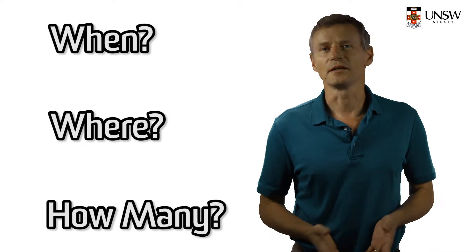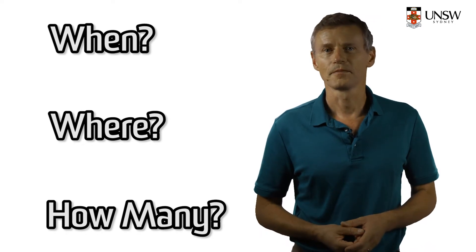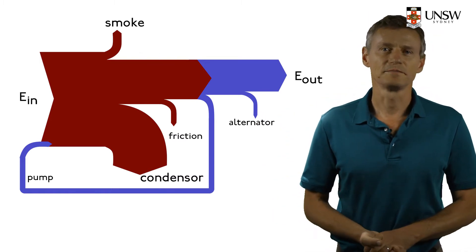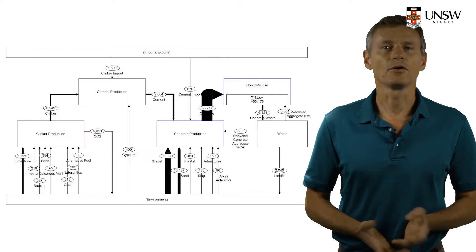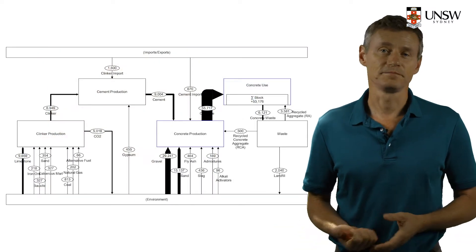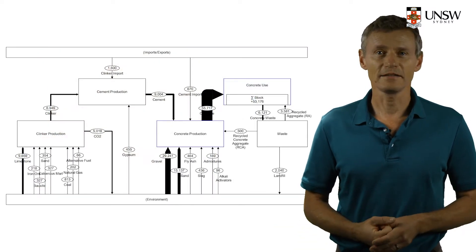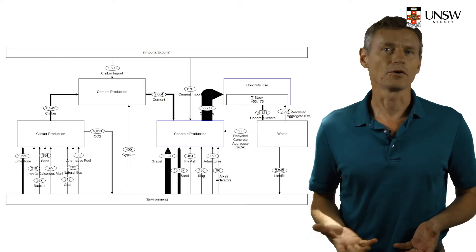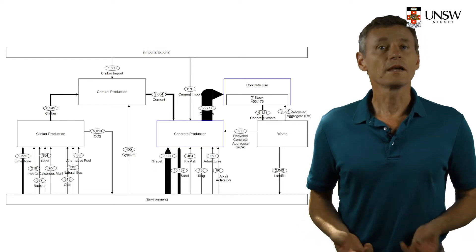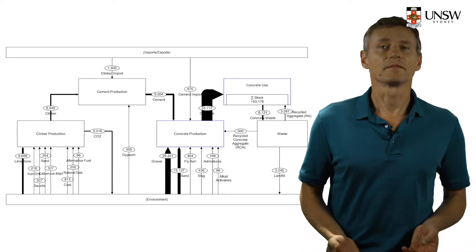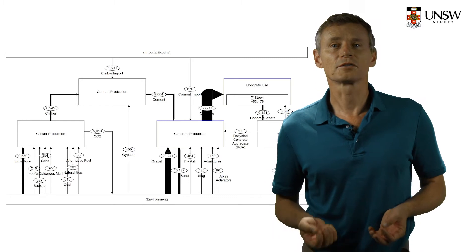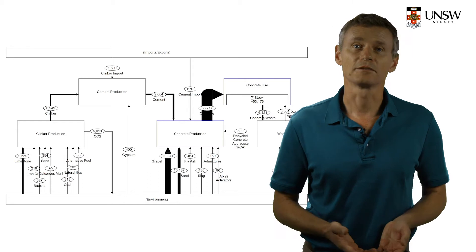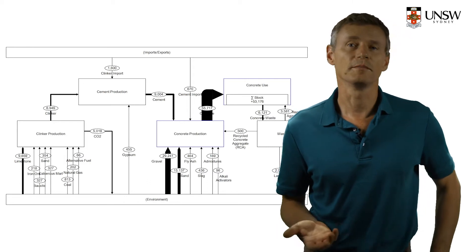This is exactly what material flow analysis does. Behind me, you can see some typical material flow diagrams. One of them is about concrete production in Australia. It tells us exactly how many of which resources we need to produce concrete. We can use this to work out how much Portland cement we can replace with fly ash or slag to produce low carbon geopolymer concrete.